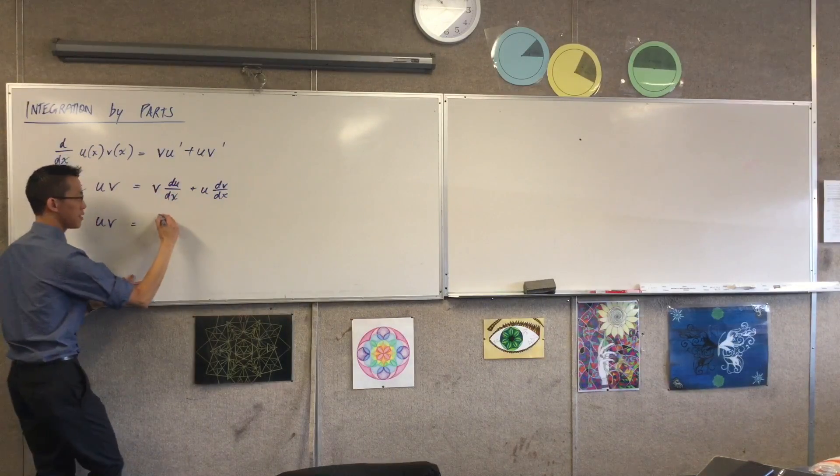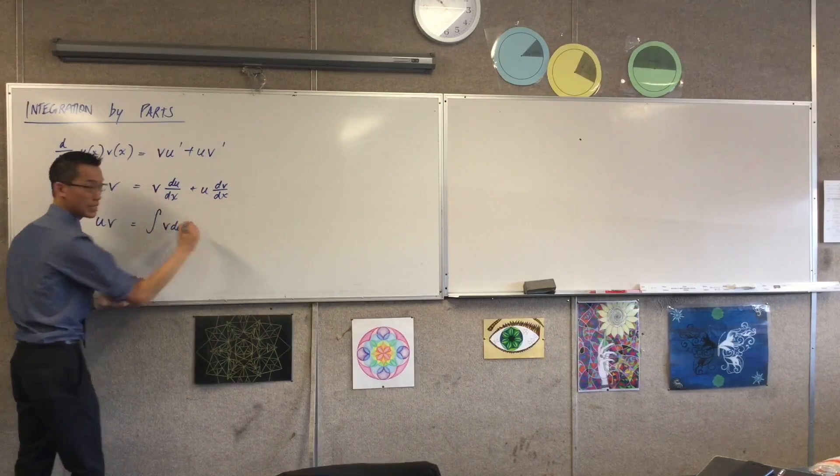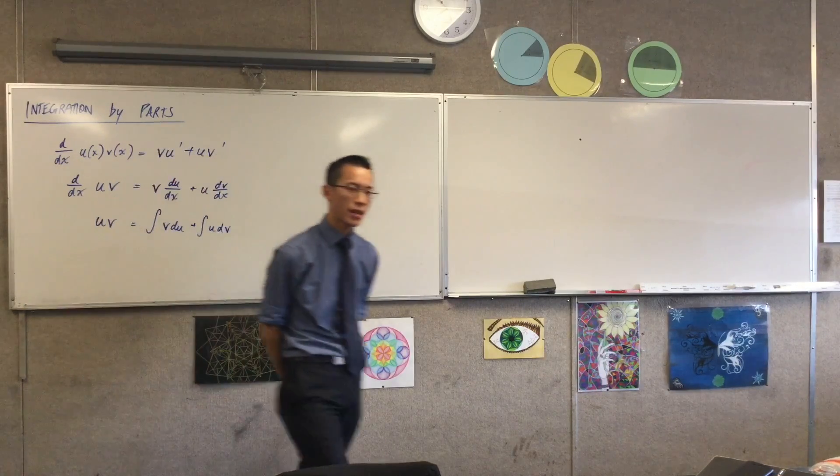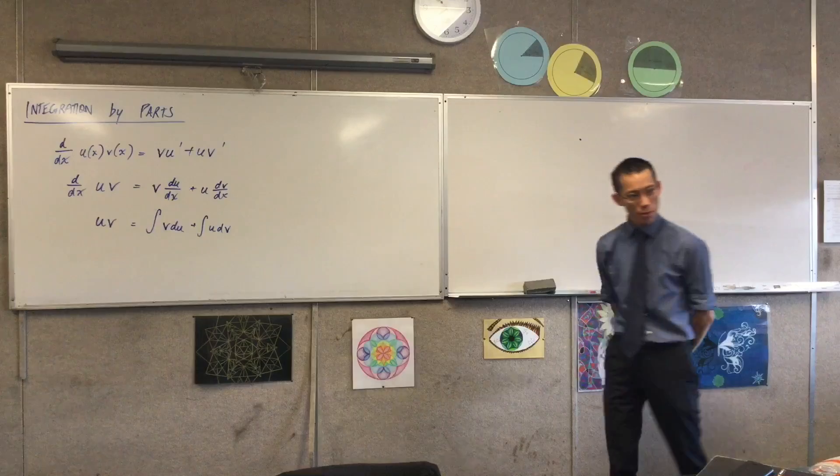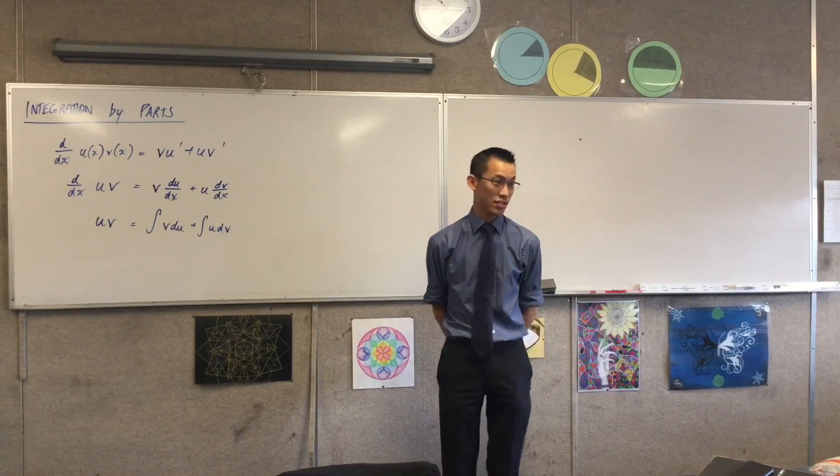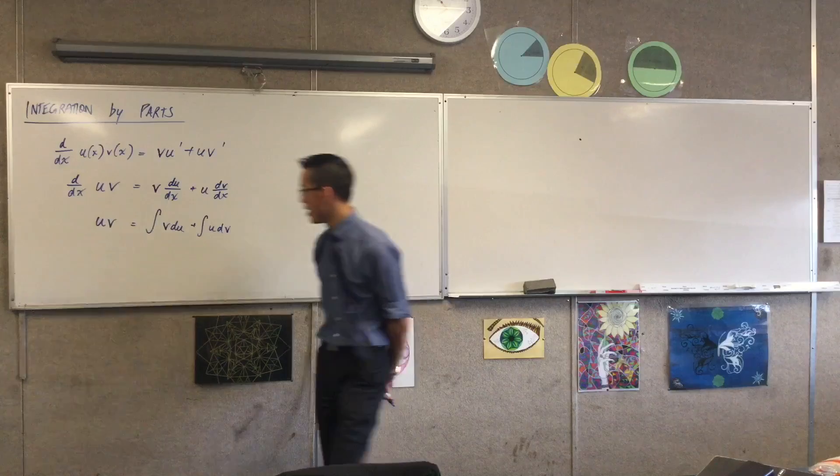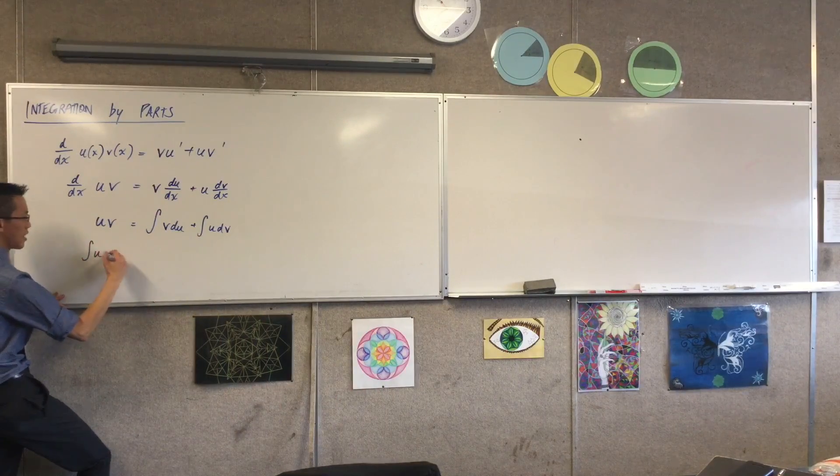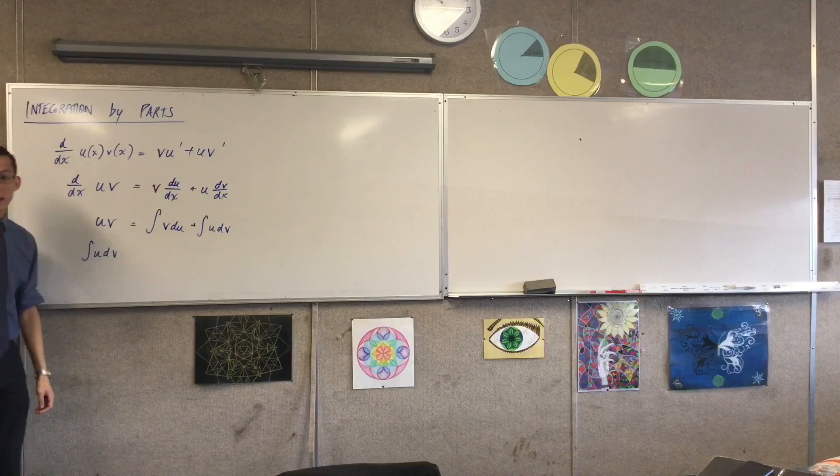Does that make sense? So what this line becomes is the integral of v du plus the integral of u dv, okay? So now, we're almost there. I've turned a differentiation statement into an integration statement. So I'm going to do one more thing. I'm going to make u dv, the integral of u dv, I should say, I'm going to make it the subject.